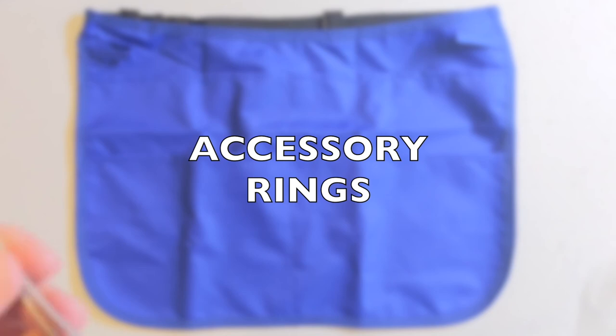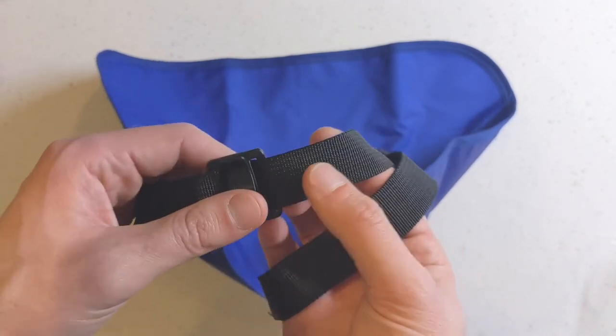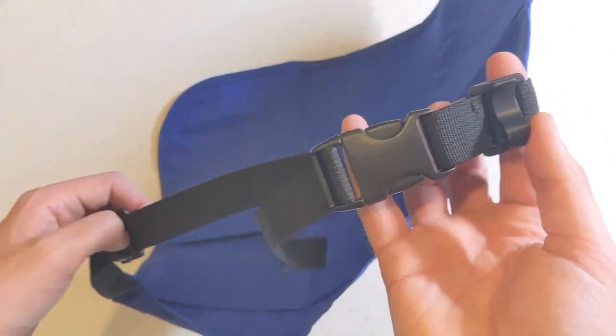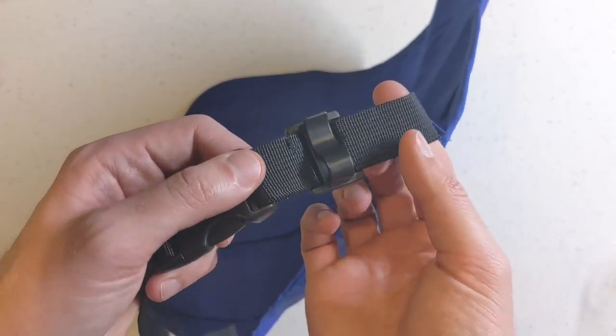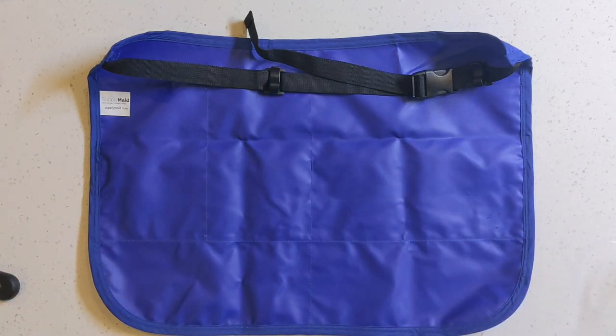Each apron comes with two accessory rings. There are also two belt hooks that come already attached onto the belt. As you can see, there's one there and one there.